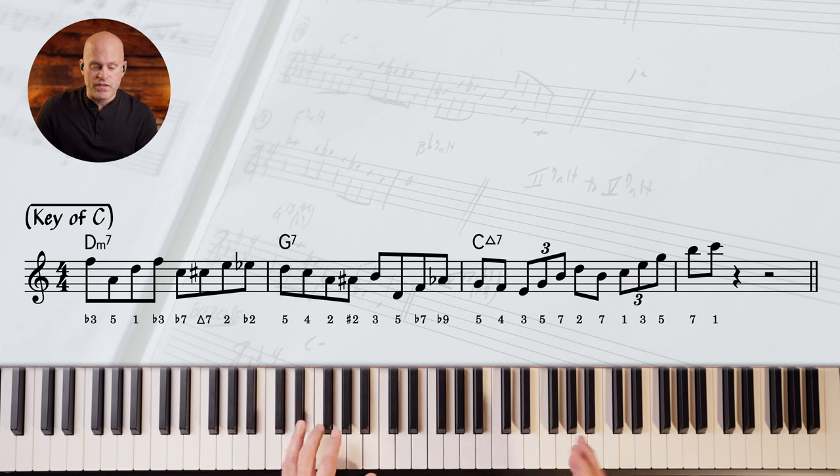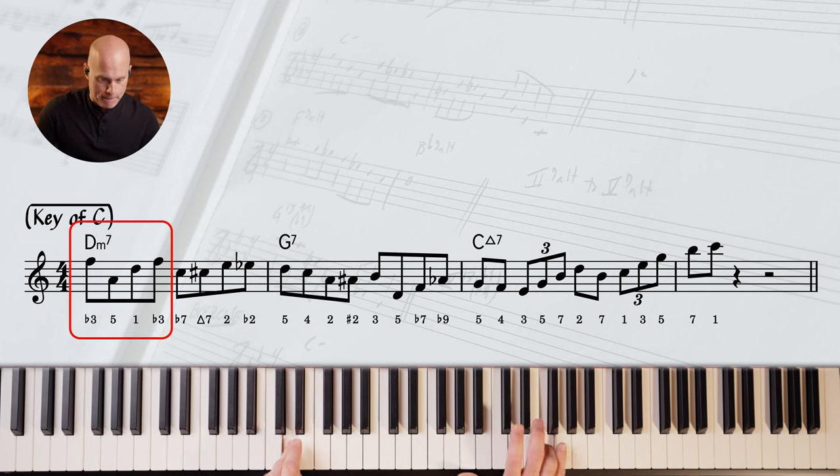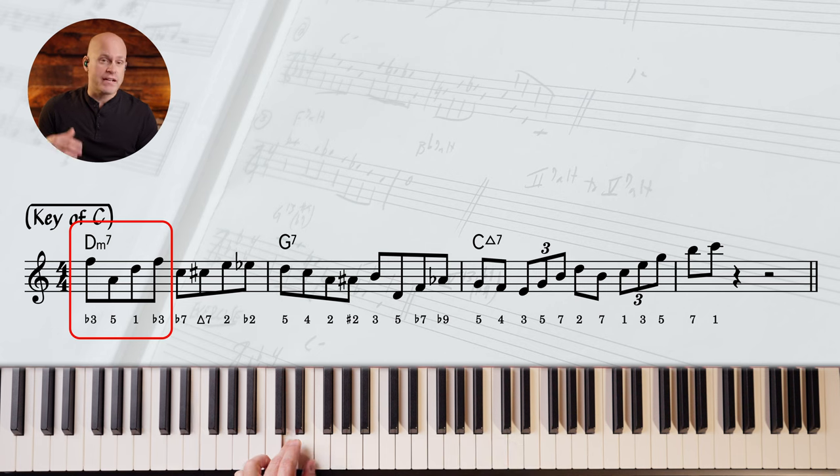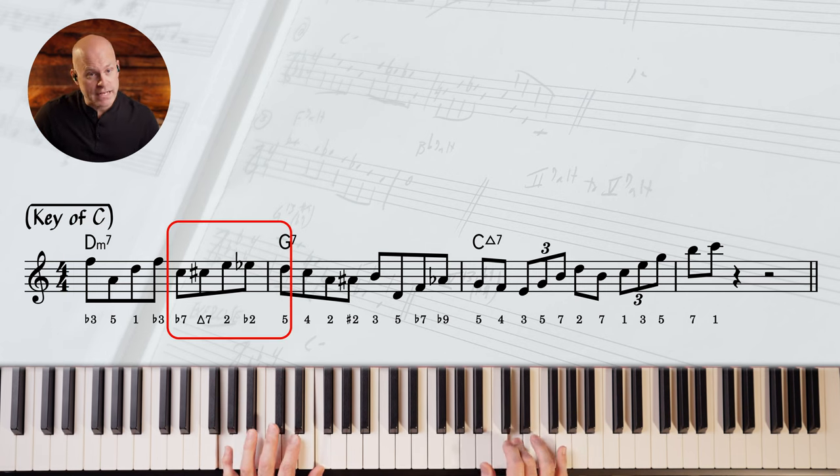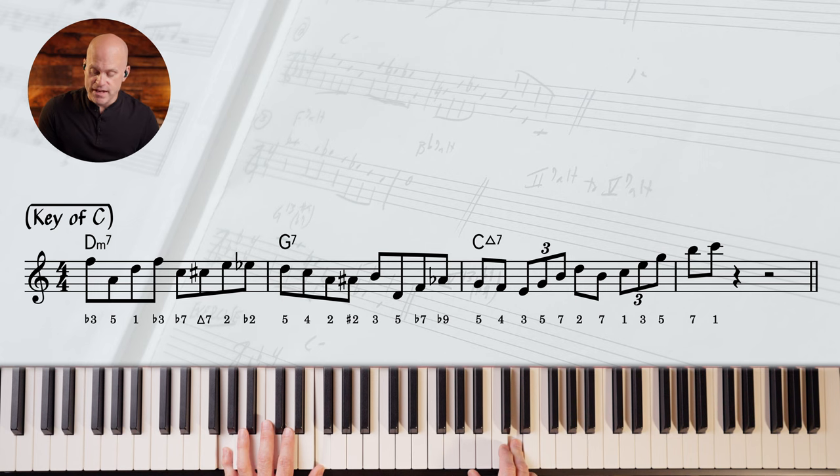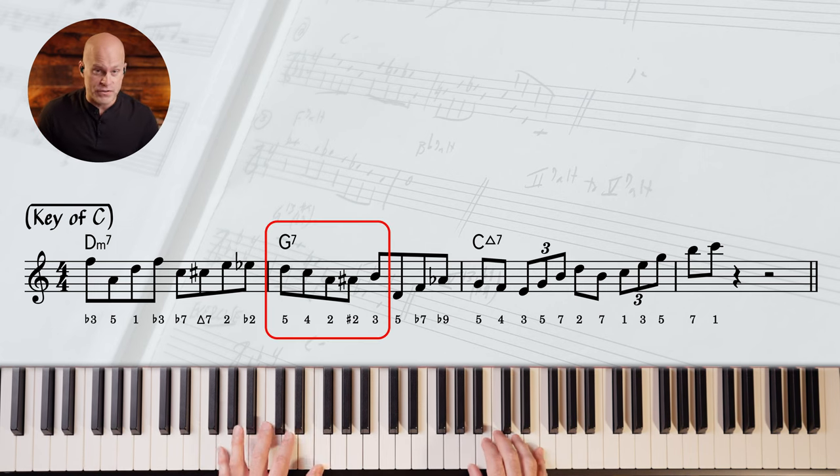D minor, we've got an arpeggio of D minor triad. Then we've got a kind of an enclosure that takes us to the fifth of G7. There's a resolution to the third of G7.